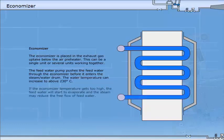If the economiser temperature gets too high, the feed water will start to evaporate and the steam may reduce the free flow of feed water.